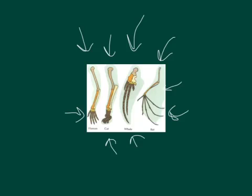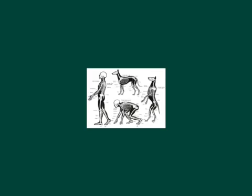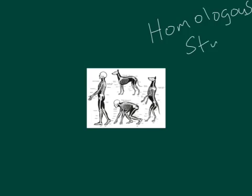As such, we call these homologous structures, specifically because these creatures are closely related evolutionarily — in other words, they're all mammals. These kinds of homologous structures continue throughout the different organisms as we move through our studies of different creatures and different species.